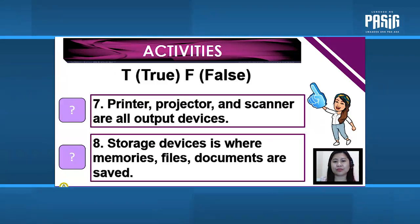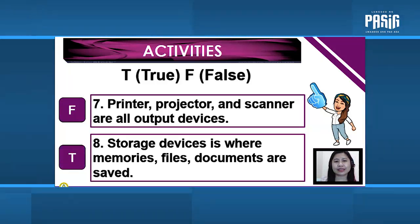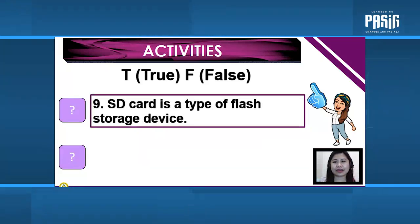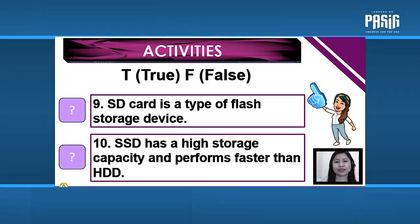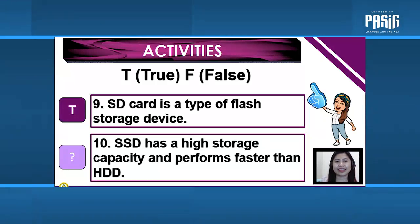Number 8: Storage devices is where memories, files, and documents are saved. Number 9: SD card is a type of flash storage device. Number 10: SSD has a high storage capacity and performs faster than HDD or hard drive. Answers: 7 — False. 8 — True. 9 — True. 10 — True. That's all for our practice today.